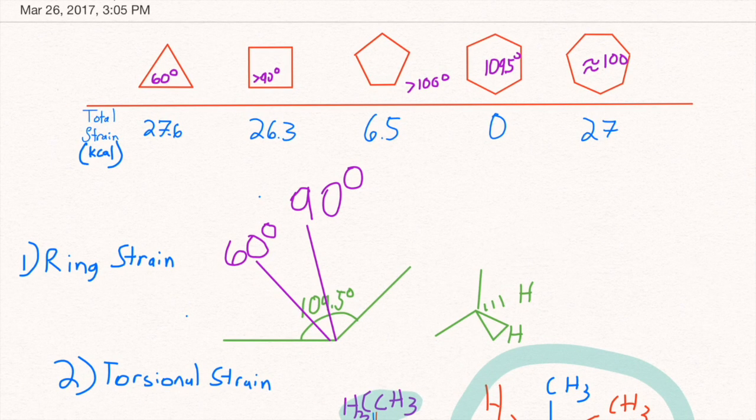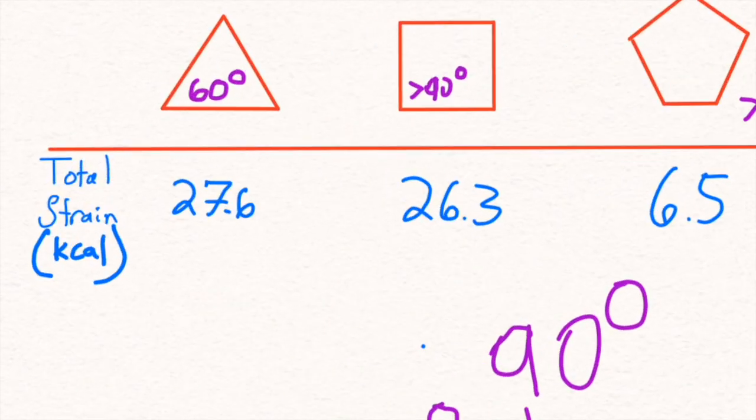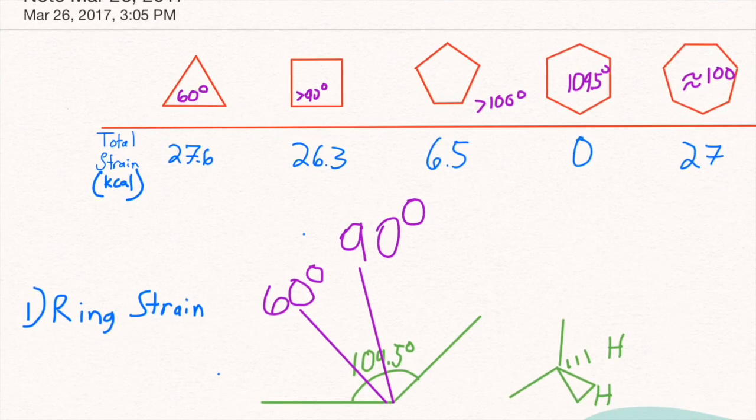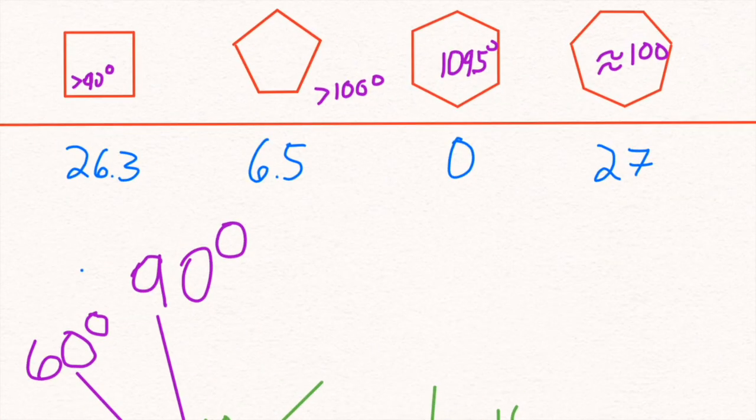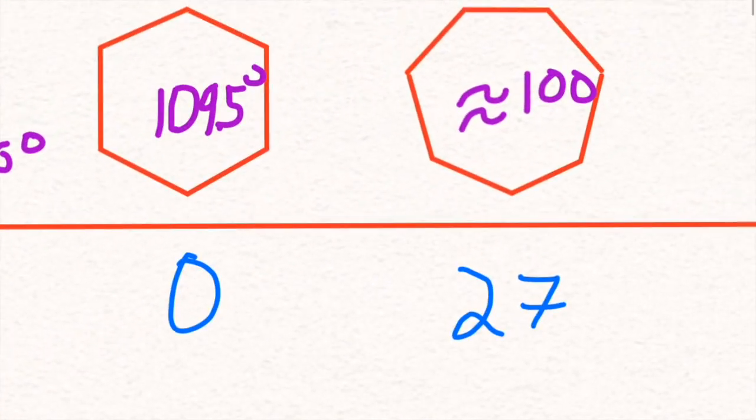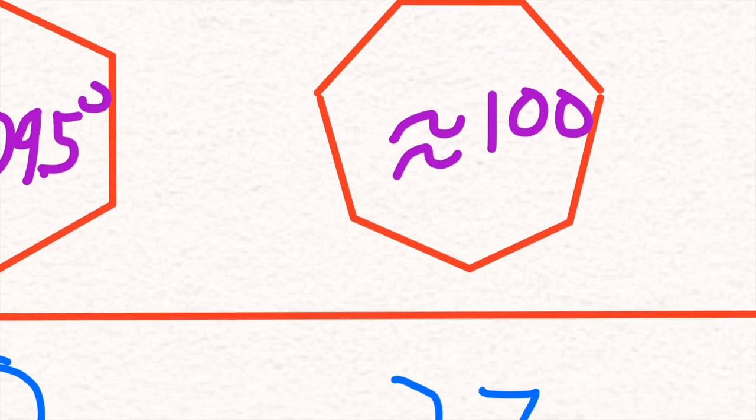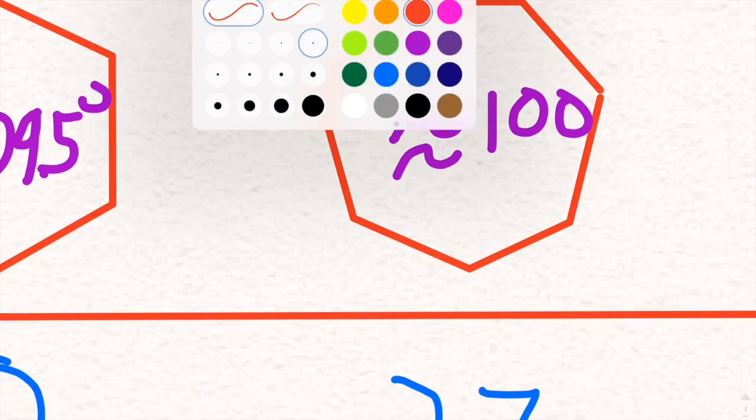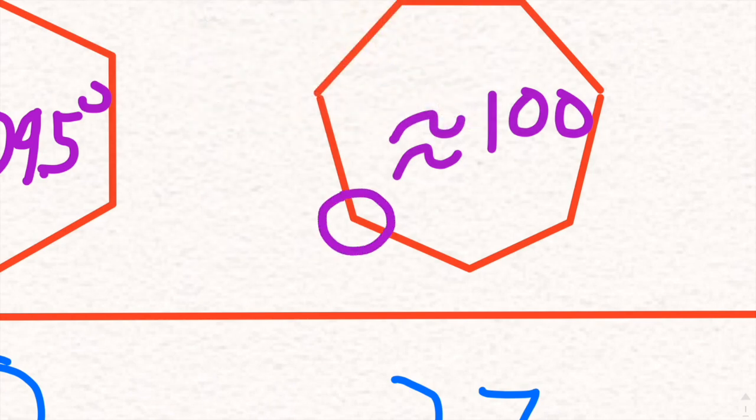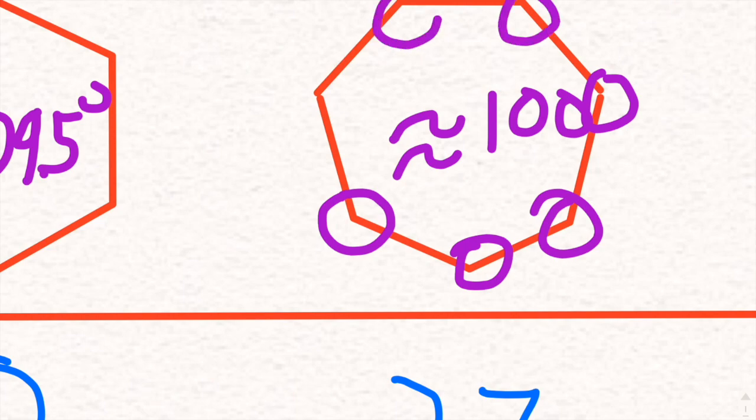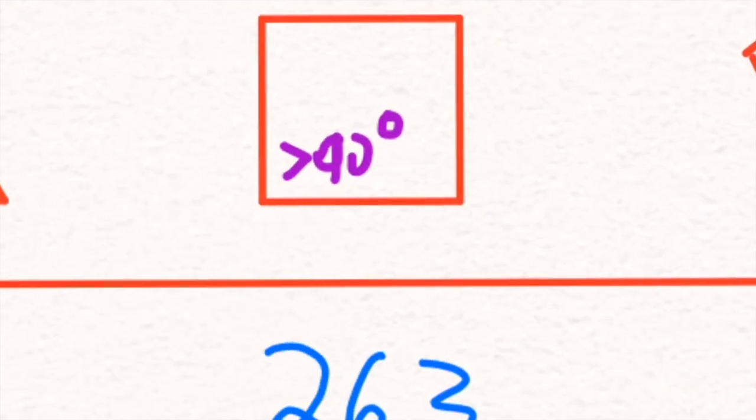So the only thing worse than this is the cyclopropane shown in the beginning. This is actually kind of due to the amount of angles we have here. All together, there's a lot of strain. Individually, this is not a lot, but since we have so many of these angles, they add up and create more strain than the four angles shown in cyclobutane.